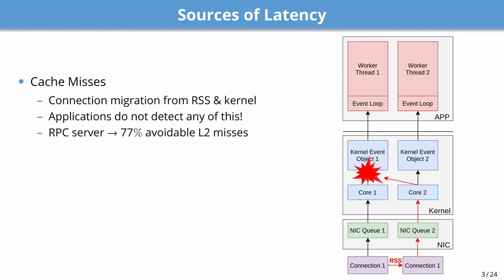To put this into perspective, in our RPC server, we measured that up to 77% of L2 cache misses are due to connection migration and are thus avoidable.